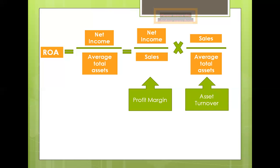Productivity refers to the volume of sales resulting from investment in assets. When a decline in productivity is observed, managers have two avenues of attack: increasing sales volume from the existing asset base, and decreasing the investment in assets without reducing sales volume.